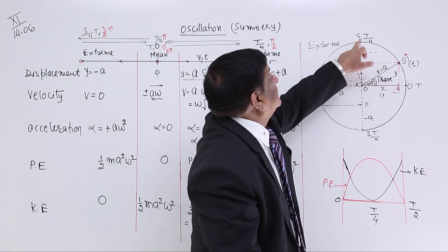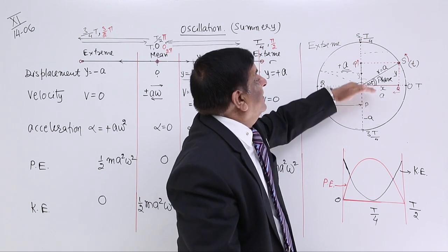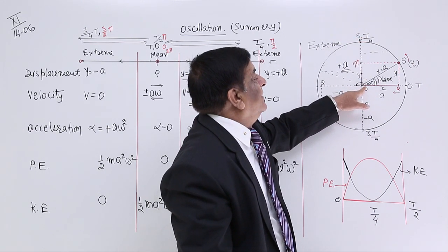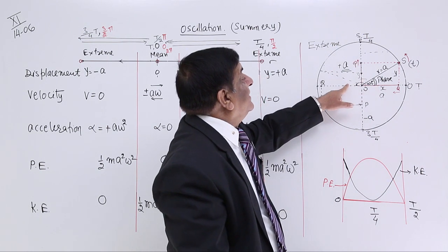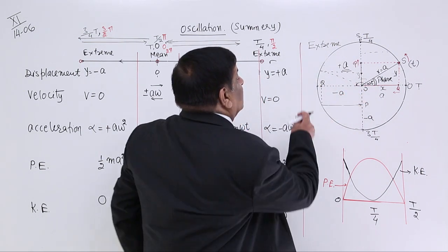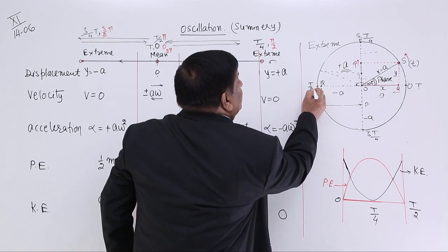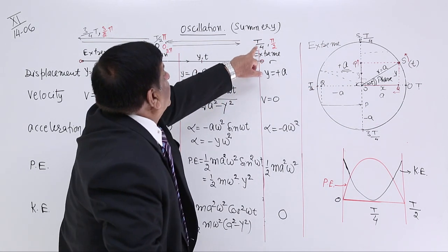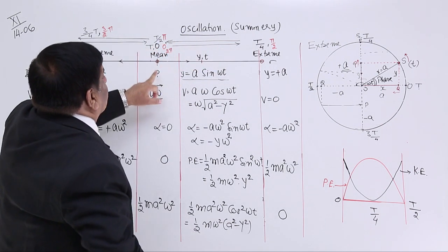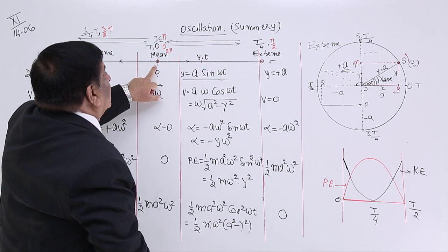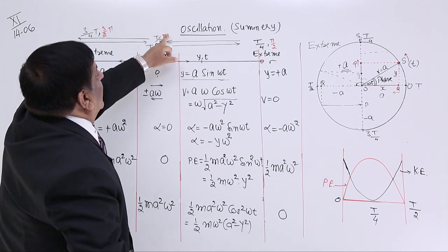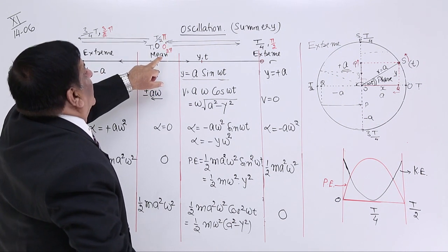S comes back around and P returns to the mean position. The angle covered so far is 180 degrees, that is π. The time passed is T/2. So at time T/2, phase is π, location is mean position.